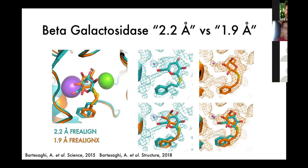An example of why this is important: take the case of beta-galactosidase, which was processed with two different software pipelines. The first, based on the original RELION, went to 2.2 angstroms, and then with advancements in CTF refinement and RELION-X they took the same dataset to 1.9 angstroms, giving substantial improvement in ligand density. The modeler ultimately changed the pose of the ligand between these two maps, which is understandable because it's still not unambiguous. What we're really interested in is coming up with a computationally driven approach that's free from modeler bias.